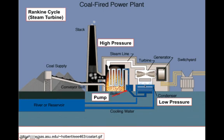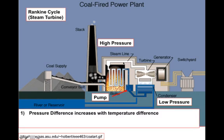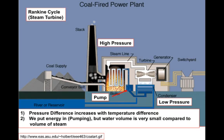To get from the low pressure side back to the high pressure side, we need a pump — this is where we put a little bit of work into the engine. It's just a little bit of work because water has a very low volume. We pump across a high pressure to put the water into the high pressure side, but then we boil it and it comes out as steam and expands about a thousandfold. The pressure difference increases with temperature difference, and we put some energy in, but the water volume is small.